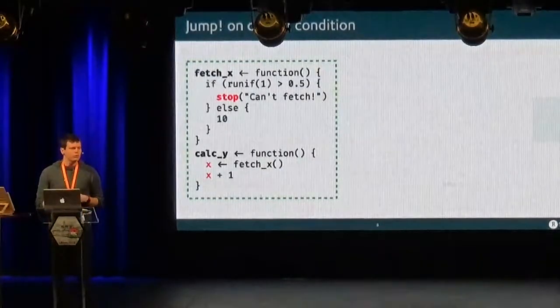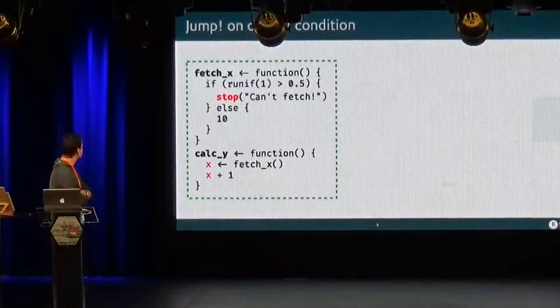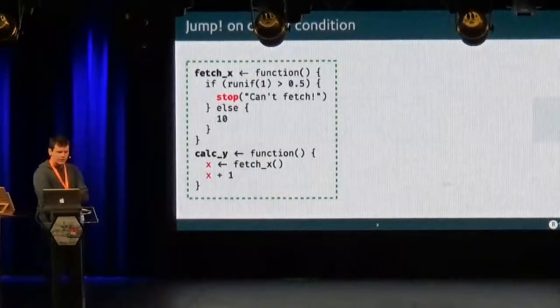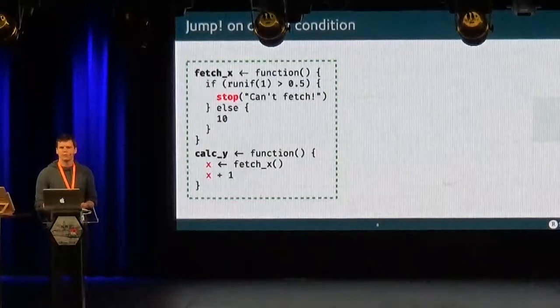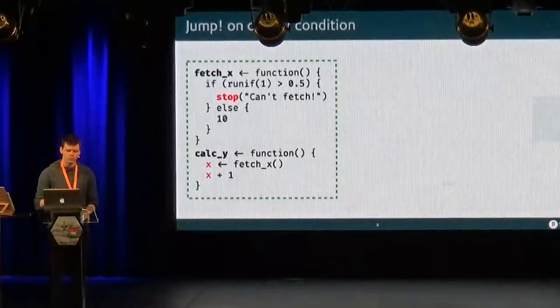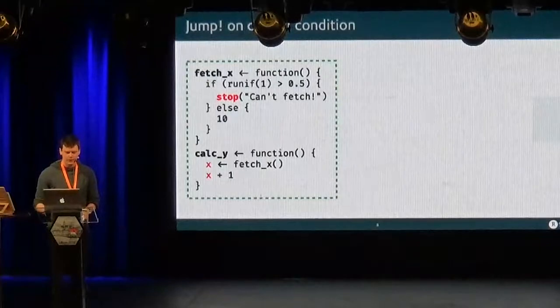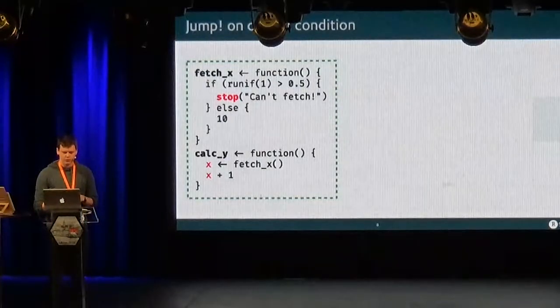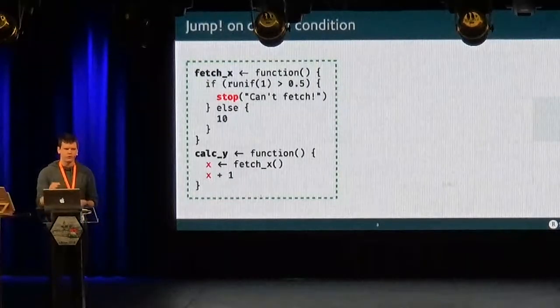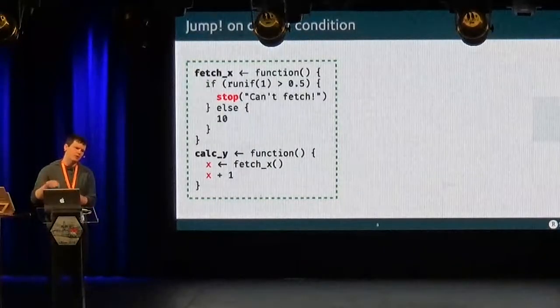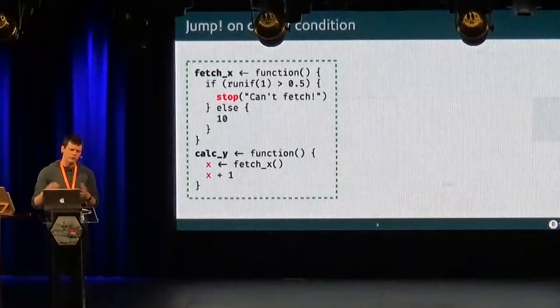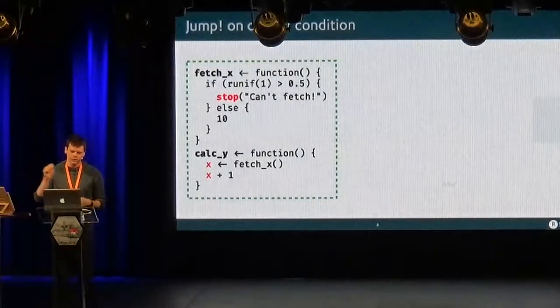Well, I'm going to use this running example. I hope that you can read some of it. So it's a simple function, fetchX, that will fail half of the time. And I will call stop, I cannot fetch. And then I have this second function, calcY, that calls fetchX, and then adds one to it. So it's a simple example, we get ten, and then we add one to it.